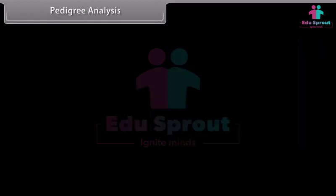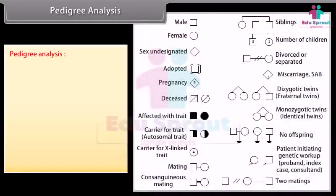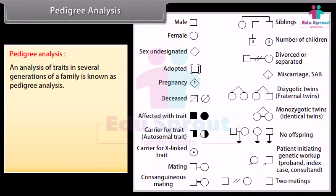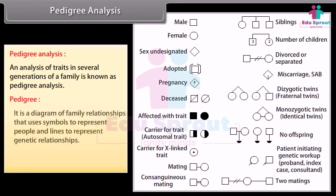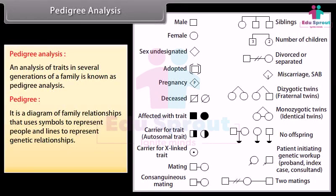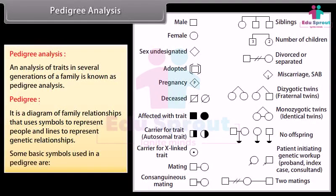Pedigree analysis: an analysis of traits in several generations of a family is known as pedigree analysis. A pedigree is a diagram of family relationships that uses symbols to represent people and lines to represent genetic relationships. Some basic symbols used in a pedigree are shown here.